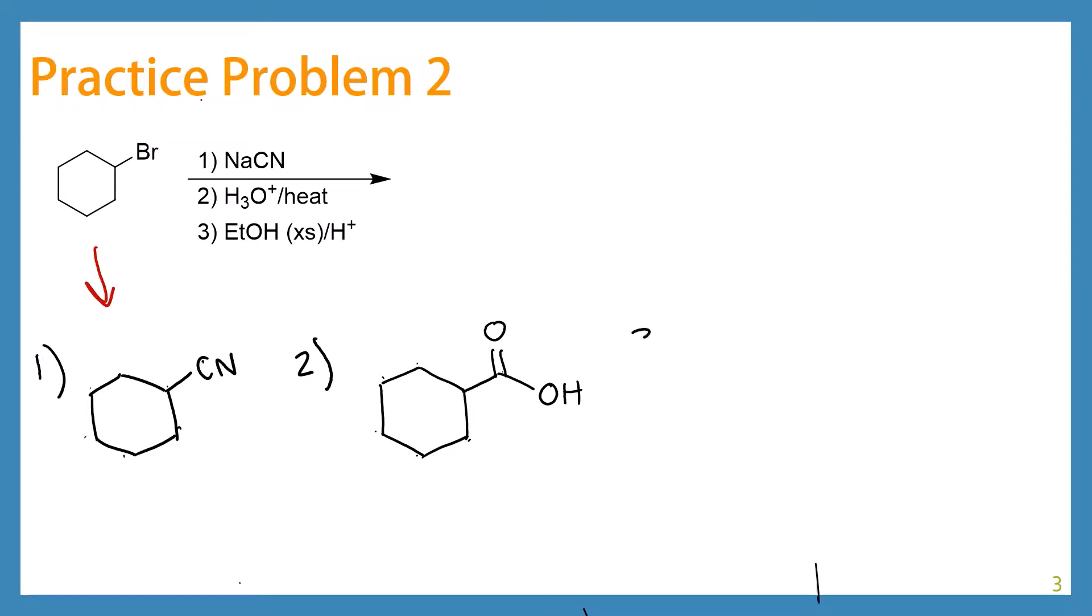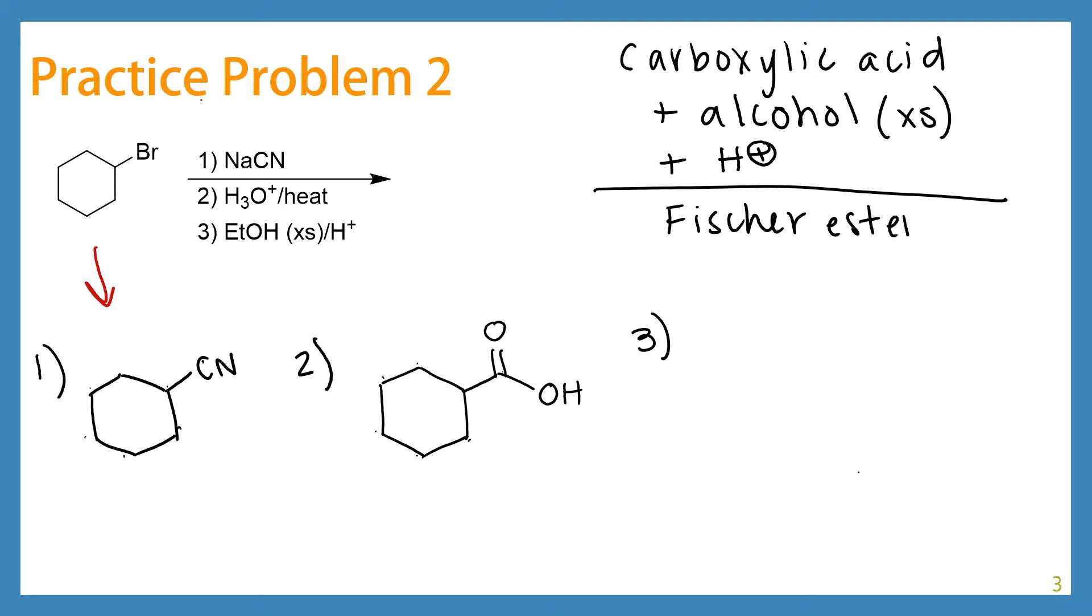Okay, so in our next step, we have an excess of ethanol in the presence of acid. That to us with a carboxylic acid should trigger the idea of Fischer esterification. So remember that carboxylic acid plus alcohol, especially in excess, plus acid, add that all together, you're talking Fischer esterification. So we know that we're going to take that carboxylic acid and turn it into an ester. And the OR group of the ester is going to match our alcohol, which was ethanol. So this is our final product.